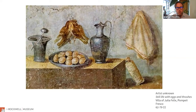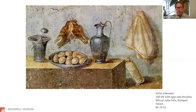Moving ahead to Pompeii in the first century, this is a still life from the Villa of Julia Felix. Julia Felix expanded her home into a business during a housing shortage, renting rooms, apartments, and spaces used as public baths. There are frescoes throughout, including this still life with eggs and thrushes — it could have been in a dining space or advertising the goods being produced, since still life in ancient Rome served both as interior decoration and as advertisement.